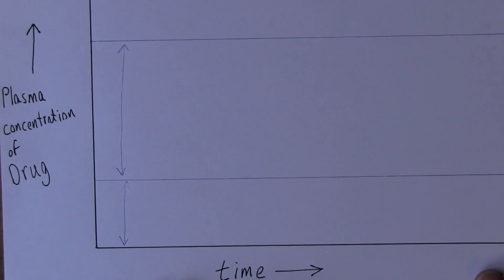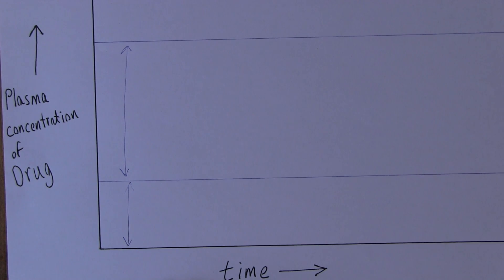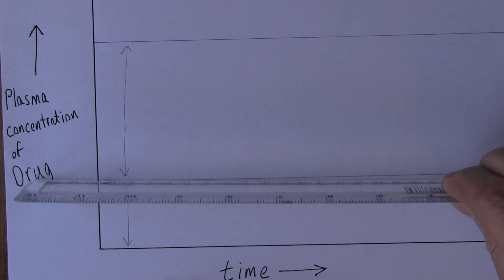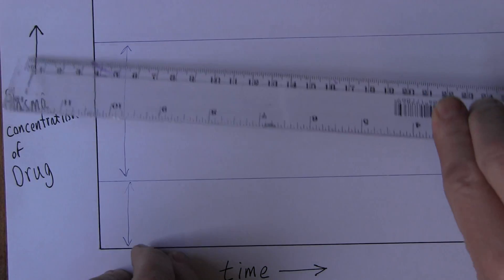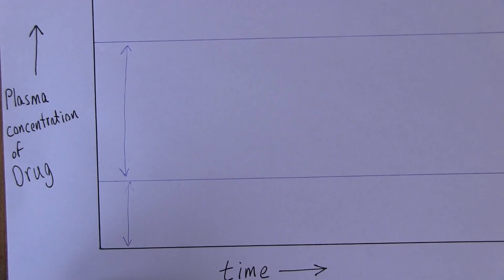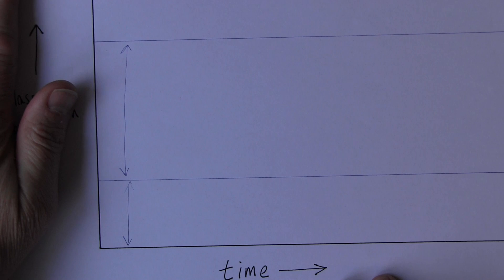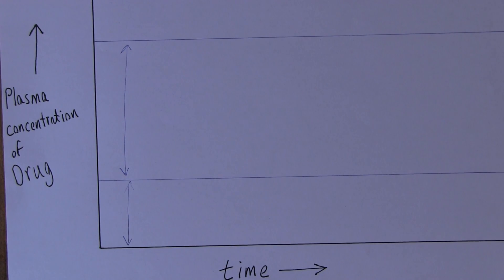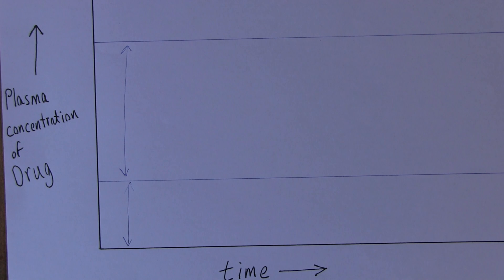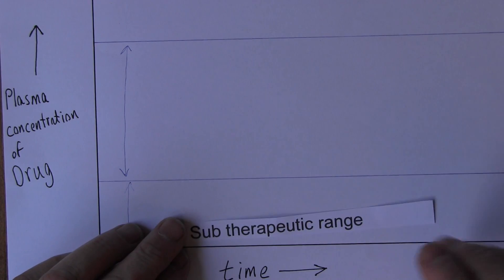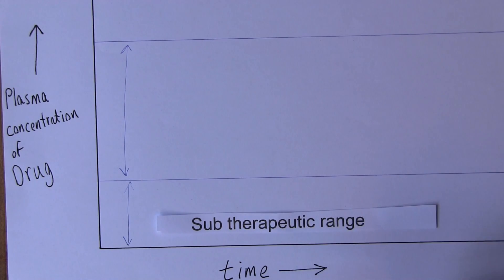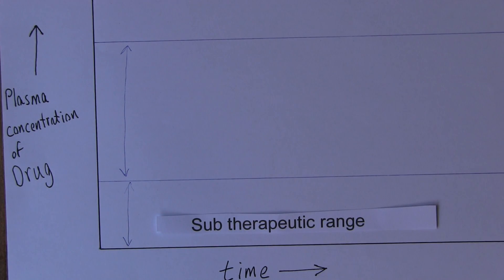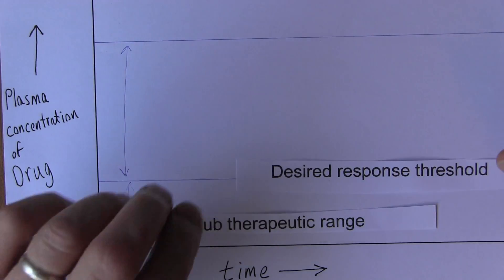Here we have a graph with plasma concentration on the vertical axis and time on the horizontal axis. There are two lines sketched: one representing a particular plasma concentration of drug, and another representing a higher plasma concentration. If we give a very small amount of a drug we'll be in the sub-therapeutic range, where plasma concentrations have not reached sufficient levels to give us the therapeutic effect we want. We have to give enough of the drug to get to the desired response threshold.